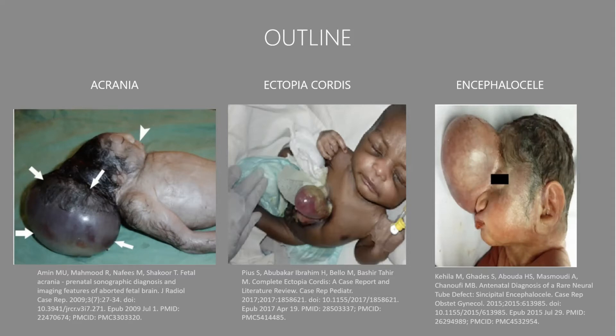Acrania is the absence of the cranium — the cap of the skull — resulting in completely exposed brain tissue. Ectopia cordis involves either a complete or partial protrusion of the heart through a defect in the thoracoabdominal wall. Encephalocele occurs when the neural tube doesn't completely close, causing a protrusion of brain matter through a failure of bone fusion at a joint.